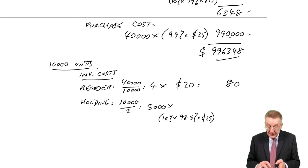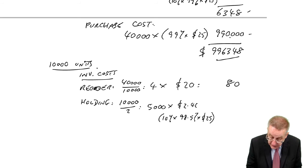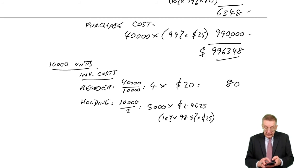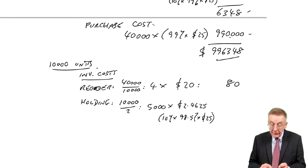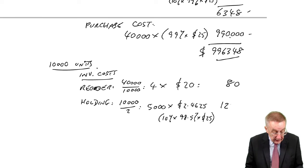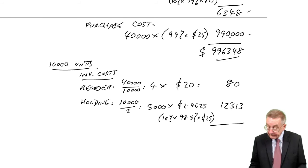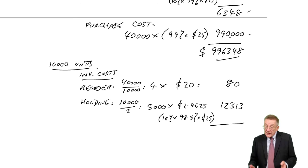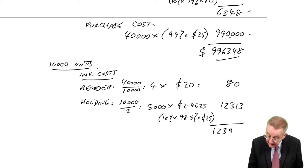So the holding cost per unit: 98.5% of 25, 10%, I get 2.4625. And 5,000 units, the average inventory, it's $12,313. So the inventory costs are massively higher: $12,393.